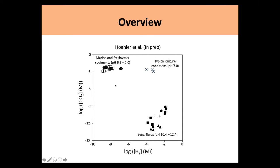From typical methanogens in freshwater sediments, such as Methanobacterium, to serpentinized fluid methanogens in Oman, we have to incrementally get closer and closer to replicating these conditions to be able to study them. There was a 2018 paper published by Dr. Hannah Miller, who characterized the NSHQ4 Methanobacterium and slowly moved it closer to the serpentinized fluid methanogen conditions in Oman. You can see on the red dots that they lowered the CO2 content slowly to get closer to true environmental conditions. We use a lot of this work as a foundation for our research.